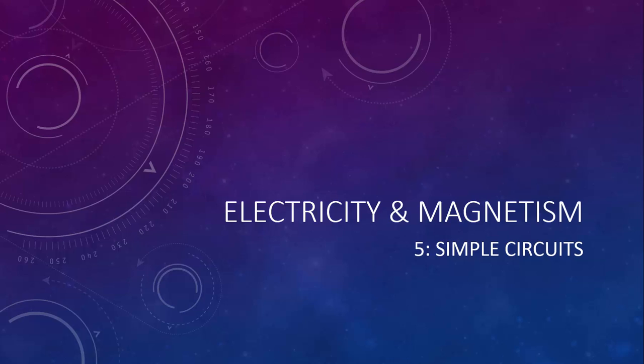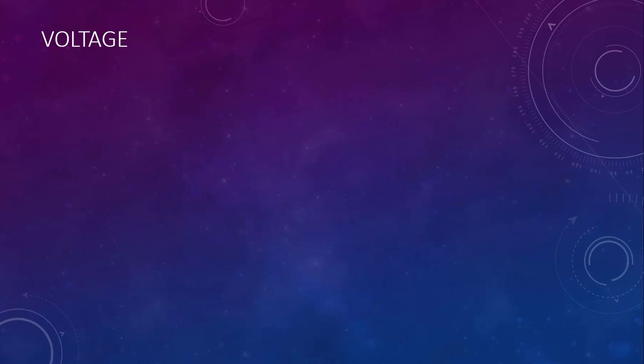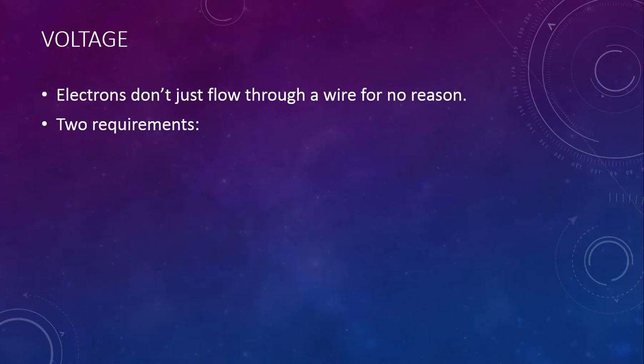This lesson is about simple circuits. Let's talk about voltage. Electrons don't just flow through a wire for no reason. There are two requirements for electrons to flow.